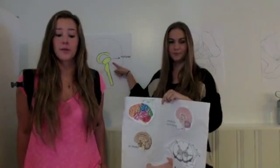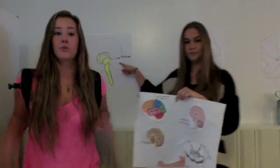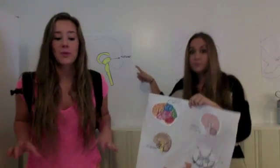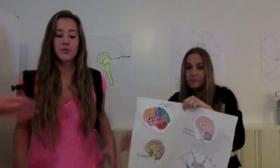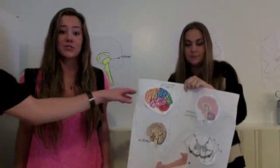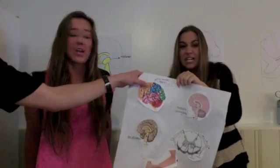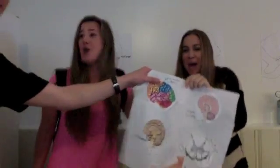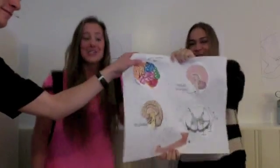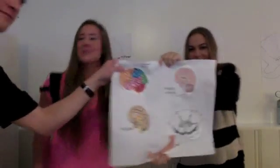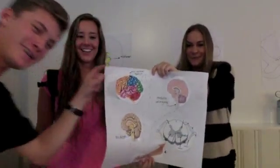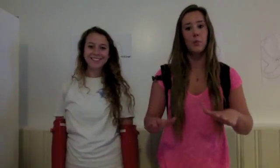This will take us to the pyramids, but beware — Swiper likes to swipe in the medulla, where the axons decussate. Say: Swiper, no swiping! Swiper, no swiping! Swiper, no swiping! Aw, man! Thanks for helping me stop Swiper. That was a close one.